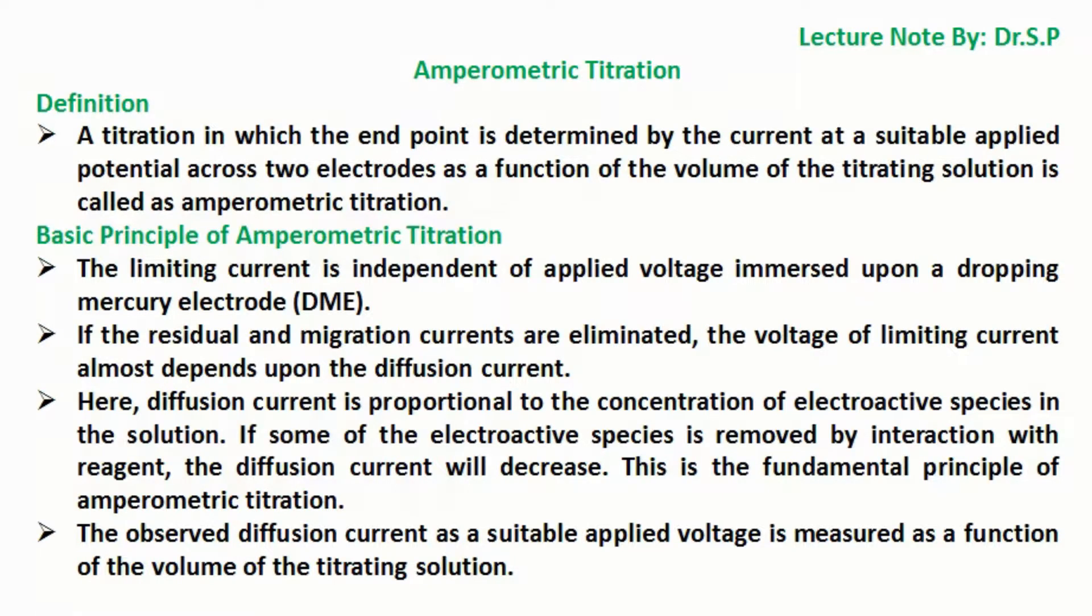Here, diffusion current is proportional to the concentration of electroactive species in the solution. If some of the electroactive species is removed by interaction with reagent, the diffusion current will decrease. This is the fundamental principle of amperometric titration. The observed diffusion current as a suitable applied voltage is measured as a function of the volume of the titrating solution.